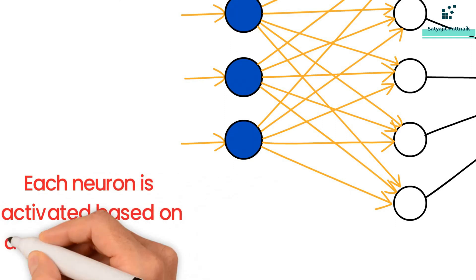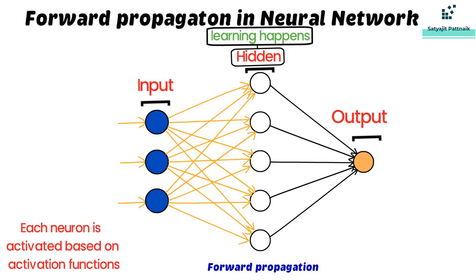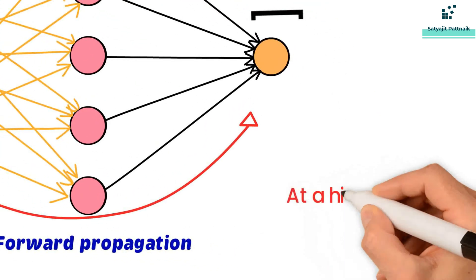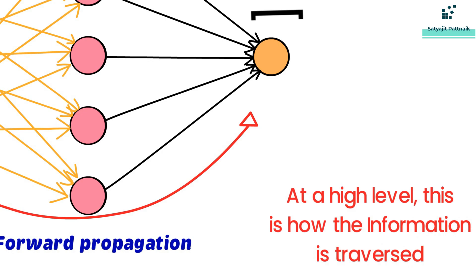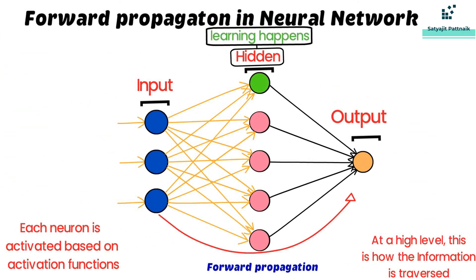Each neuron is activated based on activation functions. Forward propagation is the movement of information from input to the output layer via the hidden layers. At a very high level, this is how the information is traversed.